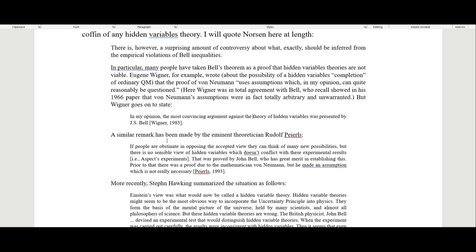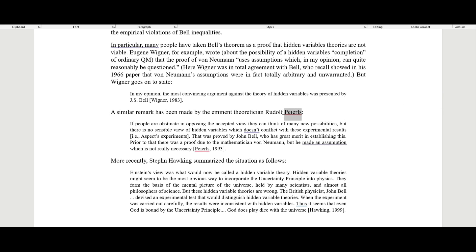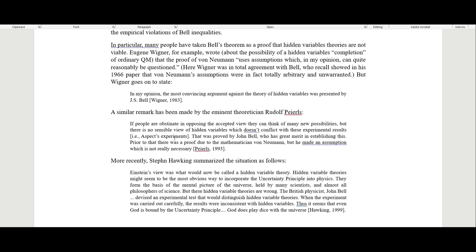A similar remark has been made by the eminent theoretician Rudolf Peierls. If people are obstinate in opposing the accepted view, they can think of many new possibilities. But there is no sensible view of hidden variables which doesn't conflict with these experimental results, i.e. Aspect's experiments. That was proved by John Bell, who has great merit in establishing this. Prior to that, there was a proof due to the mathematician von Neumann, but he made an assumption which was not really necessary.